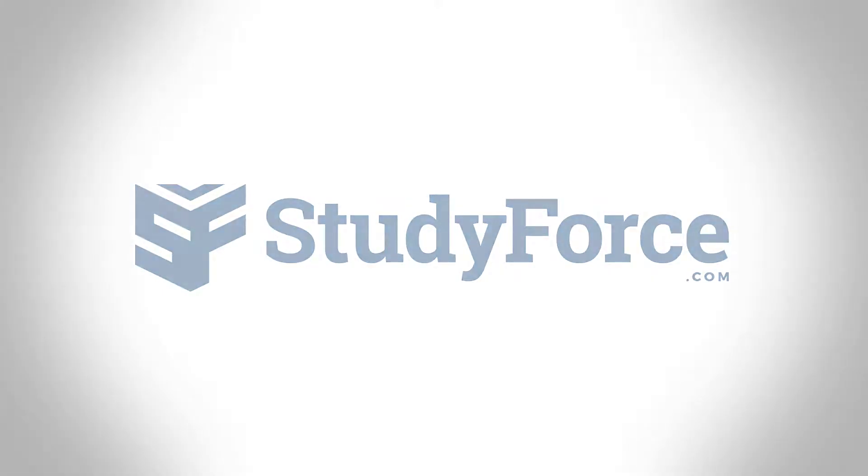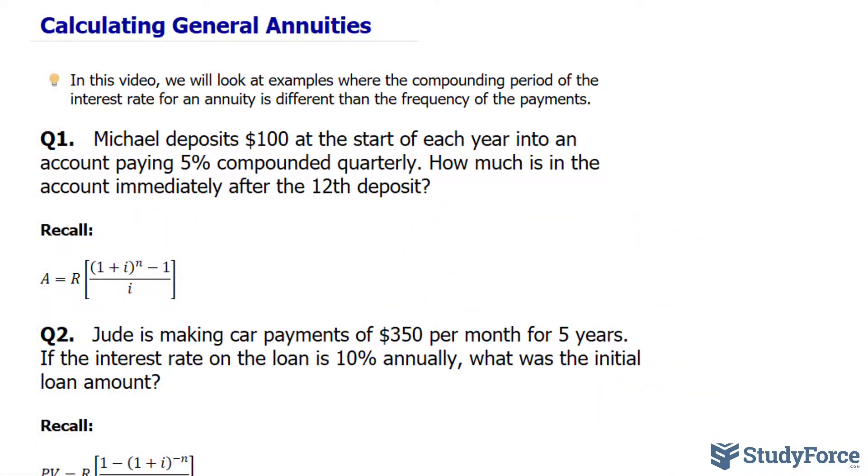In this lesson, we'll look at how to calculate general annuities. I've prepared two examples where the compounding period of the interest rate for the annuity is different than the frequency of the payment. Think of this as a continuation of our previous lesson where I showed you how to convert nominal rates into interest rates with different compounding periods.